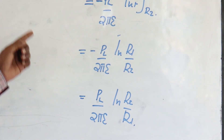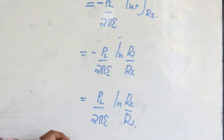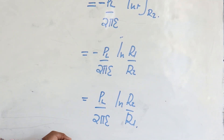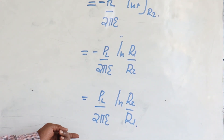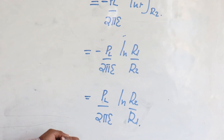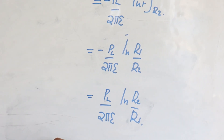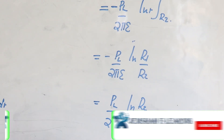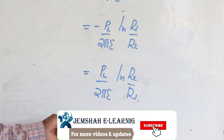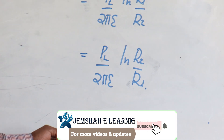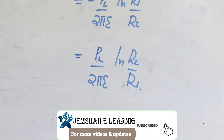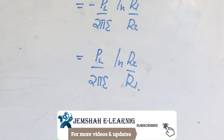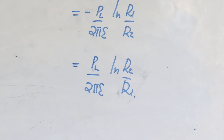And if I want to remove the negative, then this one is PL over 2πε × ln(R2/R1). This will be our voltage. It's quite okay. We can hold there a bit — take that down before I go on.